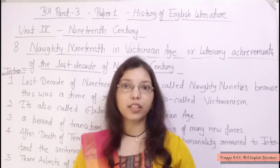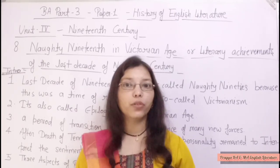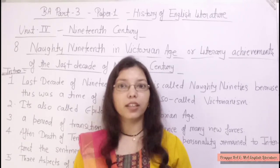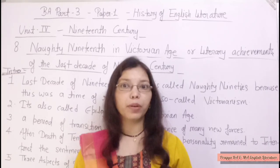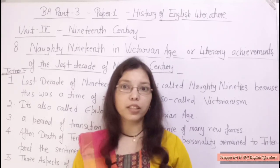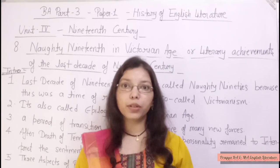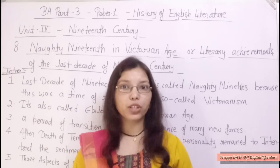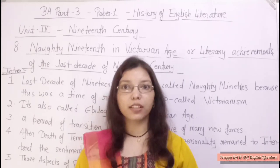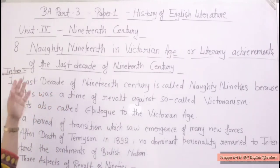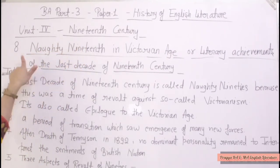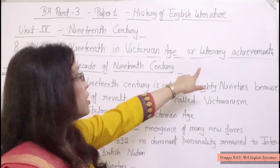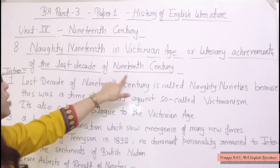If you are a student and your paper is History of English Literature, whether from U.P. State University or any other college, this topic is very important. We have already discussed related points — you will see the link in the description box. Today we are discussing Unit 4, 19th century, specifically the 1890s in Victorian age, also called the achievements of the last decade of the 19th century.